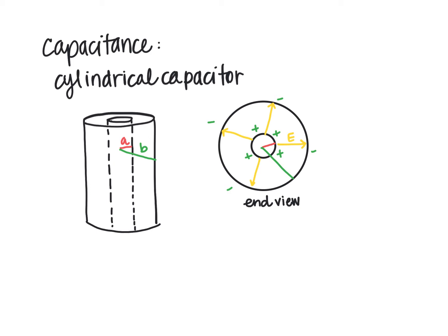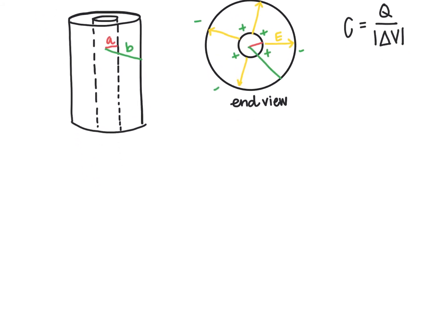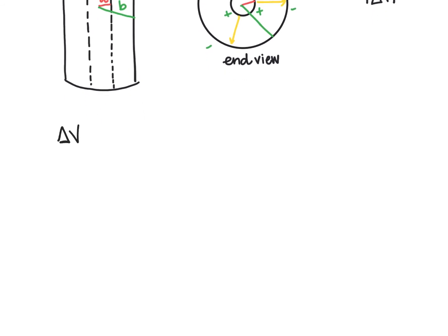Let's calculate the capacitance of this cylindrical capacitor. Capacitance is the ratio of the net charge on one of the electrodes over the electric potential difference delta V. So first we need to determine delta V. Delta V equals the negative integral of the electric field dotted with dr, so we need to determine the electric field.